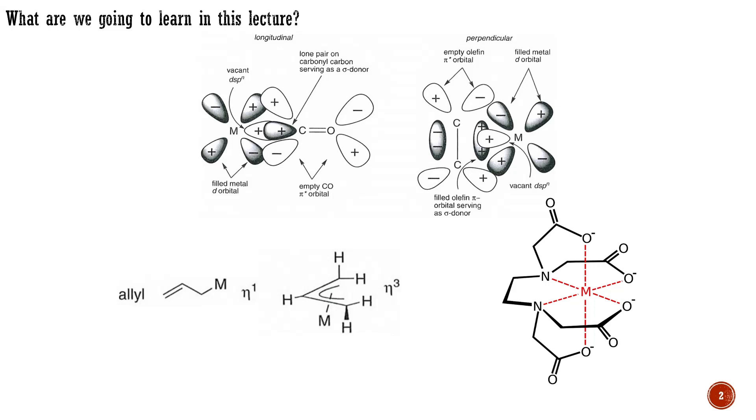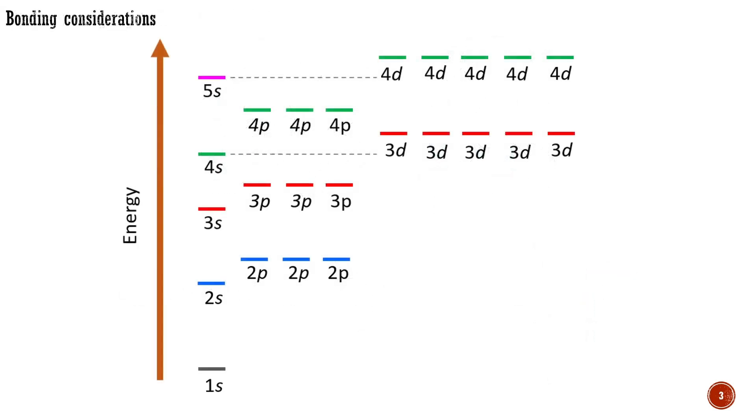The transition series is formed by the systematic filling of the d-shell, which in transition metals is of lower energy than the next s and p levels. Thus, transition metals have partially filled d-orbitals and vacant s and p-orbitals.